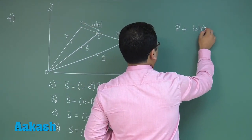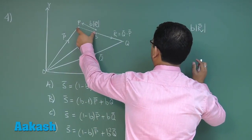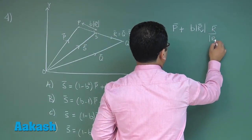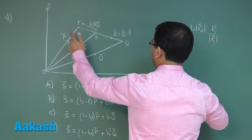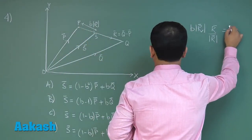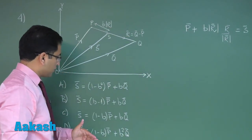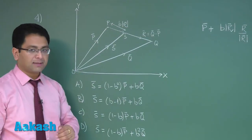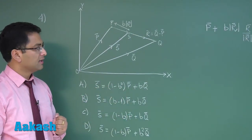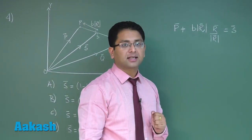The direction of this vector would be r vector by magnitude of r, and this entire vector would equal S vector. Let's try to see - in the whole question we need to find the relationship between S vector, P vector, and Q vector. That means we need to eliminate r vector from our expression.